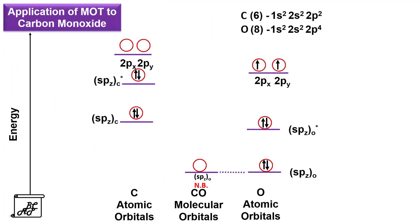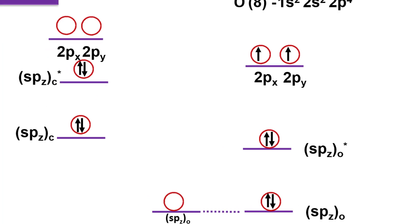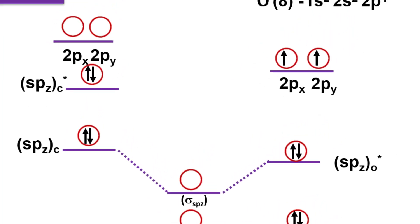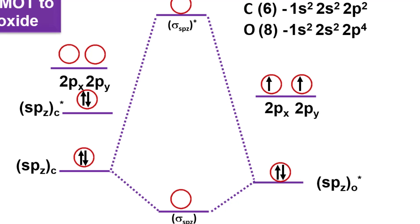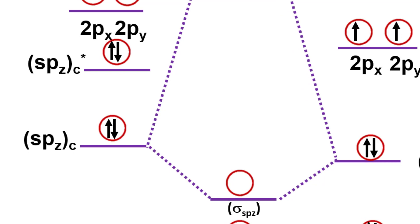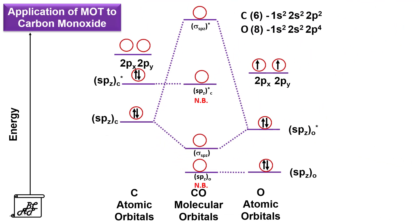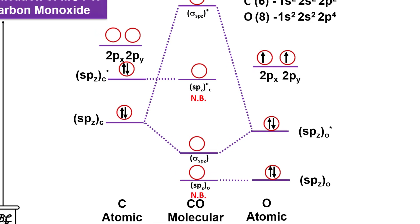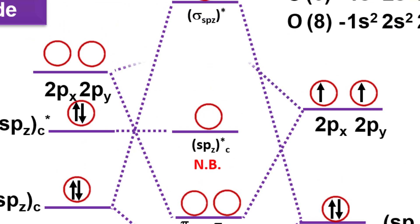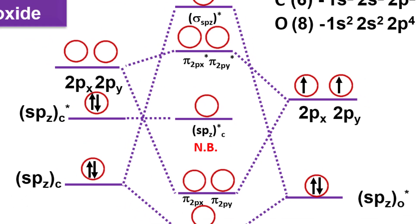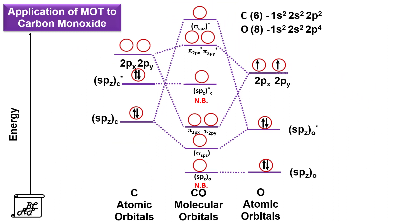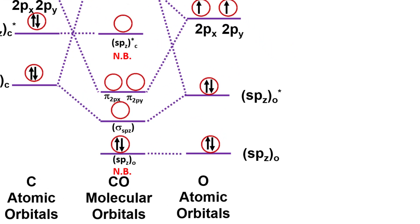The bonding orbital of carbon and the antibonding orbital of oxygen have similar symmetry and comparable energy, so they overlap to form one bonding molecular orbital — sigma spz — and one antibonding molecular orbital — sigma* spz. There is no suitable orbital to overlap with the antibonding orbital of carbon, so it remains non-bonding. The remaining 2px and 2py orbitals of carbon and oxygen participate in pi bonding, forming π2px, π2py bonding molecular orbitals and π*2px, π*2py antibonding molecular orbitals. Total 10 valence electrons are filled: 2 into spz(oxygen), 2 into sigma spz, 4 into π2px and π2py, and the last 2 into the spz* non-bonding orbital of carbon.